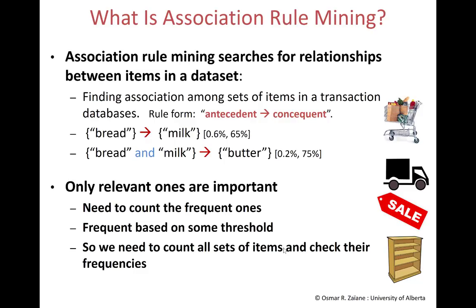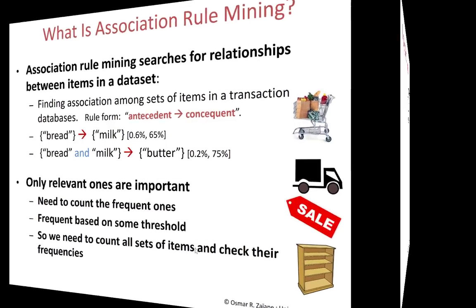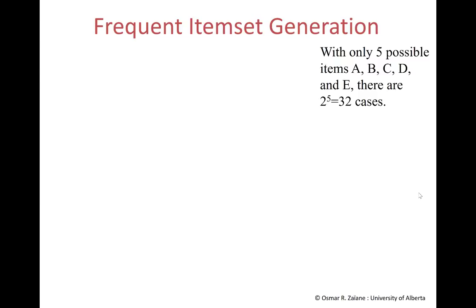Of course, the association rule should only focus on the relevant items, relevant based on frequency, so we need to count them — how many times they were purchased together. Counting seems trivial, but it isn't when you have millions of transactions and thousands of different items in the store. Let's first simplify our problem. If you have a store that only sells five different items — A, B, C, D, and E — I would have 32 different combinations to count.